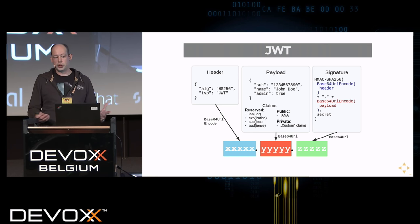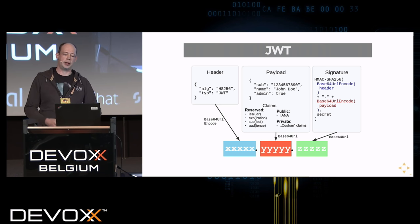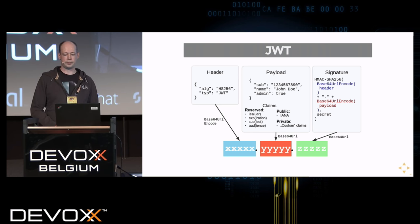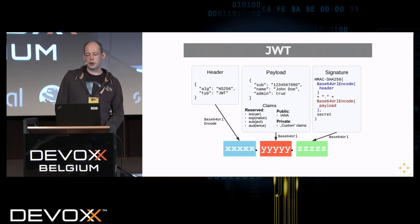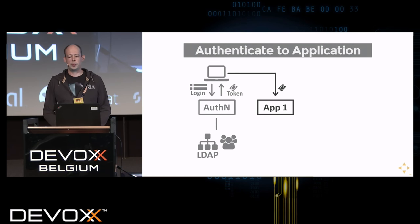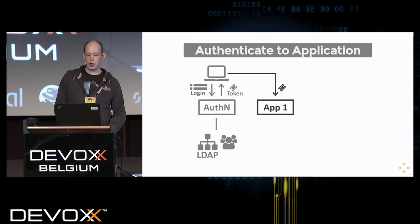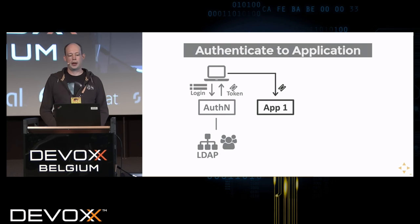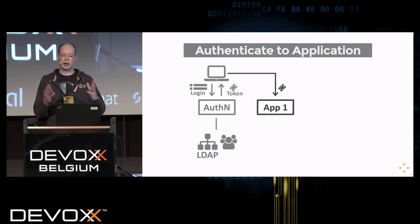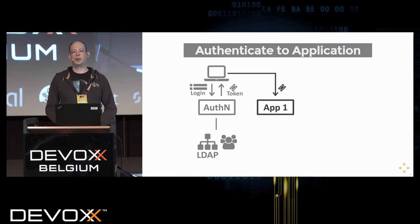The JWT is rather small — you could include it in an HTTP header, and it wouldn't be much larger than a usual session ID. When you present the token to the application, the application checks the signature and reads the content to validate that the user is who they claim to be.